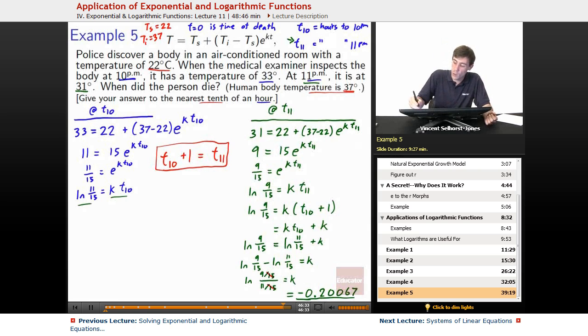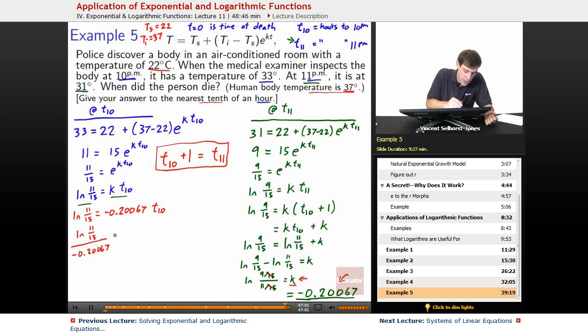That means we can now take this piece of information. We know what k is. We slot that in. We've got natural log of 11 over 15 is equal to negative 0.20067 T10. We divide by that. We've got natural log of 11 over 15 divided by negative 0.20067 equals T10. So T10 is equal to approximately, we'll round it to 1.5456.